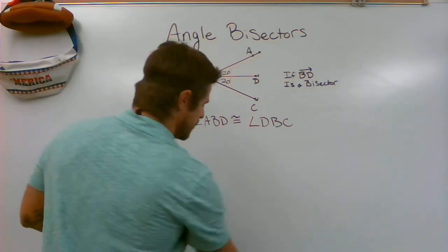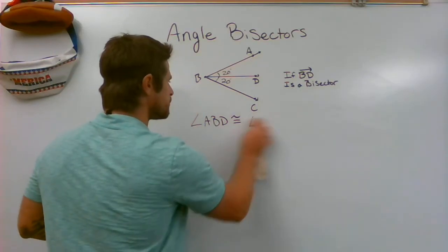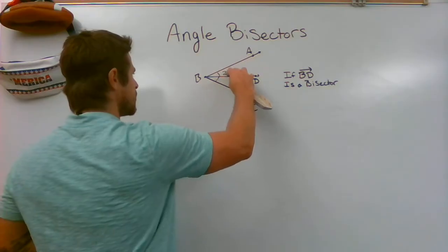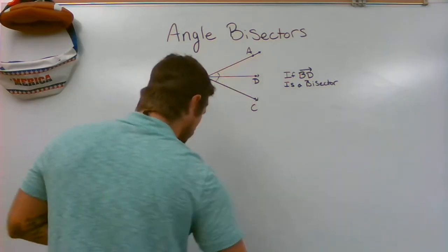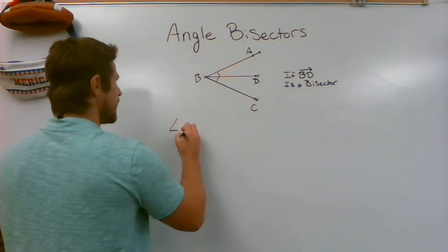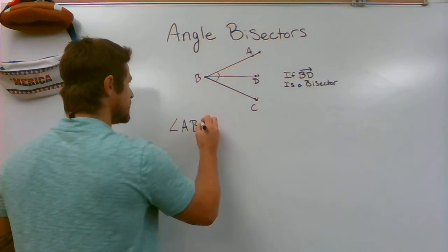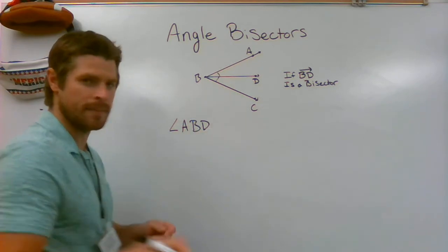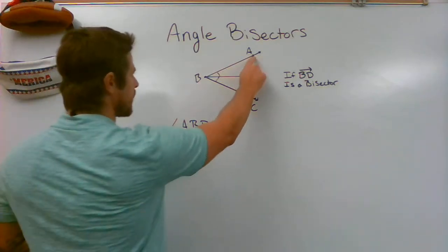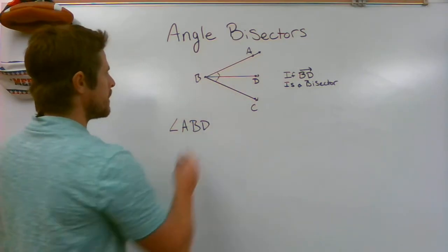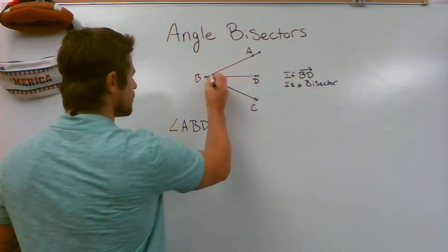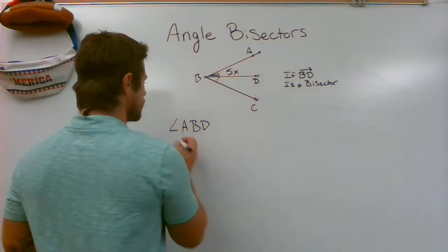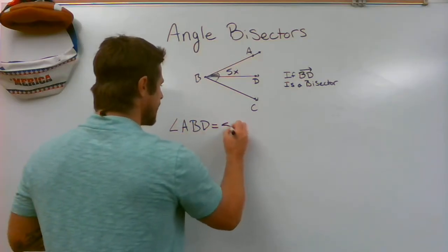Let's say we are told for this problem that angle ABD, and one thing I always like to do as a little tip is I'll read it and then do a quick scan with my finger over the top. So I'm talking about this angle, and if I'm told that that is 5x, so if I'm told angle ABD is equal to 5x,